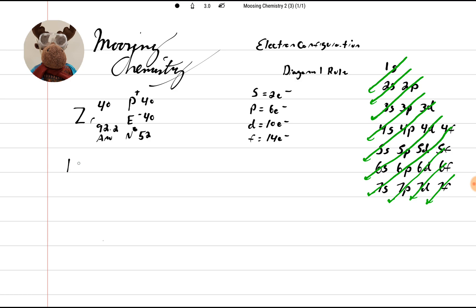We simply start until we run out. So we're going to be 1s2, 2s2, 2p6, 3s2, 3p6, 4s2.